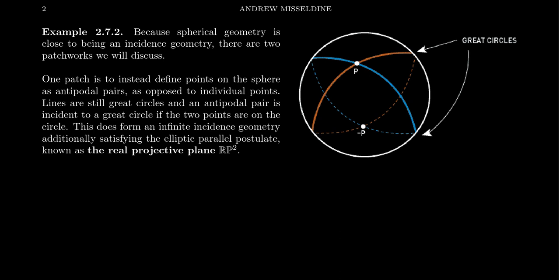When we studied spherical geometry, it does satisfy the elliptic parallel postulate. It satisfies all of the incidence axioms except for line determination. It is possible, like in this diagram, that two lines can intersect at more than one point. In fact, if you take any two lines, they always intersect — the elliptic parallel postulate is satisfied. But in spherical geometry, the intersection will always be two points.